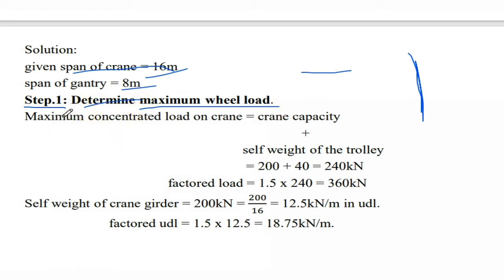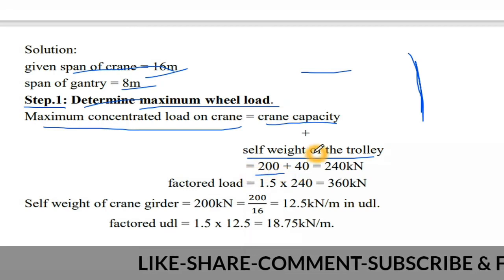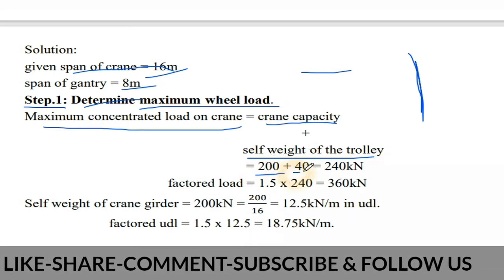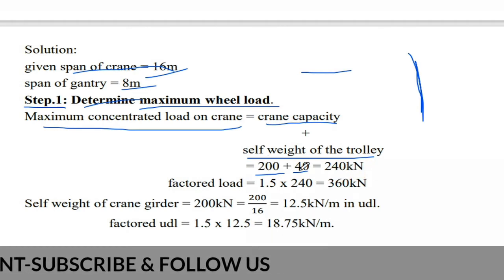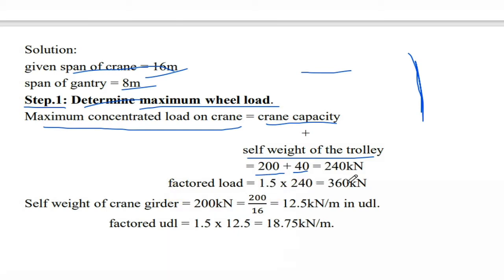Maximum concentrated load on crane equals crane capacity plus self-weight of trolley, which is 200 + 40 = 240 kN. The factored load is 1.5 × 240 = 360 kN. This is one of the two concentrated loads on the crane.